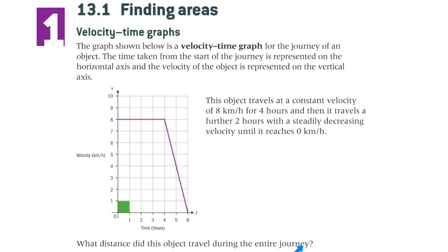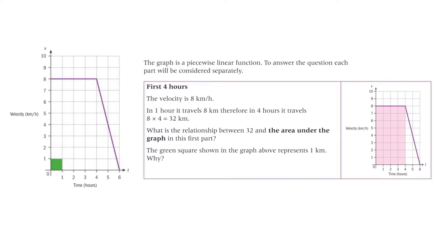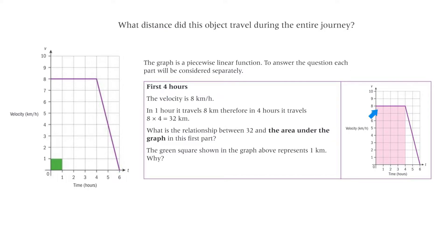What distance did this object travel during the entire journey? The graph is a piecewise linear function — piecewise means it has a different equation to describe each part. Each part will be considered separately. For the first 4 hours, the velocity was a constant 8 km per hour. So in 1 hour it travels 8 km, and in 4 hours it travels 32 km. The relationship between 32 and the area under the graph is that they are the same — 4 times 8 gives the area of that rectangle, which is 32.